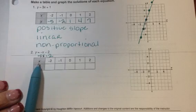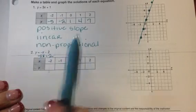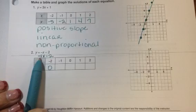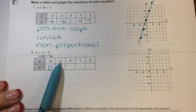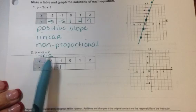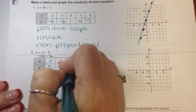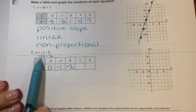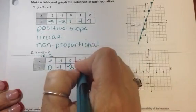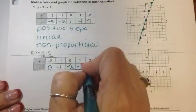Let's do some plugging in. For x = -2: negative 1 times negative 2 minus 2 gives me 0. For x = -1: negative 1 times negative 1 minus 2 gives me negative 1. For x = 0: negative 1 times 0 minus 2 gives me negative 2. For x = 1: negative 1 times 1 minus 2 gives me negative 3. For x = 2: negative 1 times 2 minus 2 gives me negative 4.